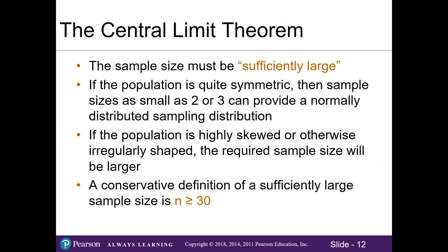For the central limit theorem to work, though, our sample size must be sufficiently large. If the population is symmetric, then our sample size can be small, and it will still provide a normally distributed sampling distribution. This is quite rare, though. If our population is highly skewed or irregularly shaped, then our required sample size will be larger. A conservative definition of what a sufficiently large sample size for means is when n is greater or equal to 30. Think about your Airbnb data. After you clean and organize it, you want to make sure that you have at least 30 lines of data. However, your files are so large, you should have well more than 30 listings for your analyses.